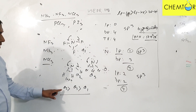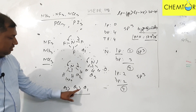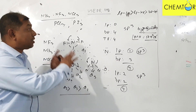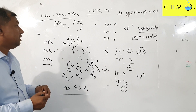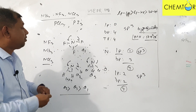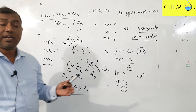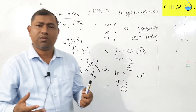The order of the bond angle is theta2 greater than theta3 greater than theta1. So let's compare and apply. The order of the bond angle is established.